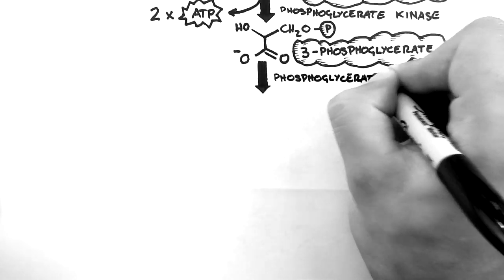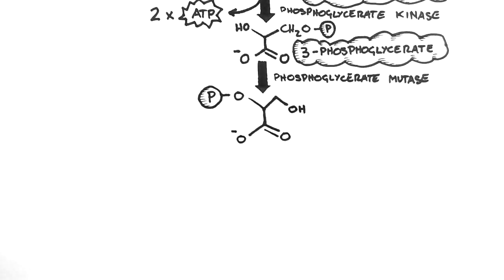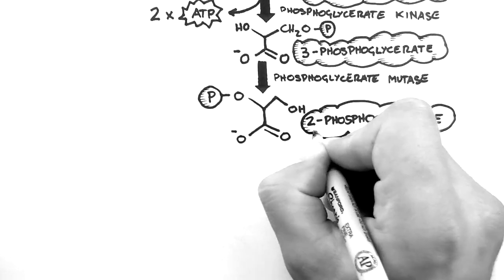The enzyme phosphoglycerate mutase is essentially an isomerase. So it creates the isomer 2-phosphoglycerate from 3-phosphoglycerate.